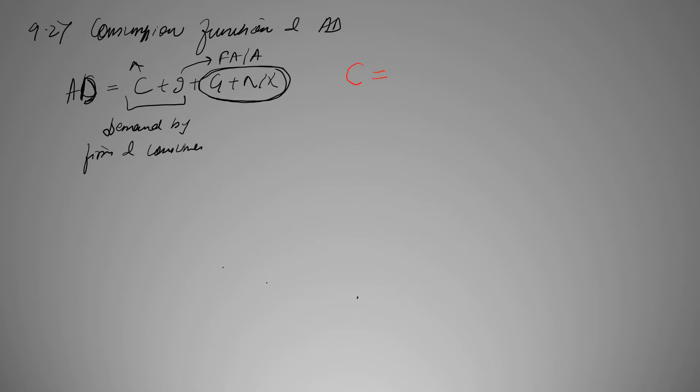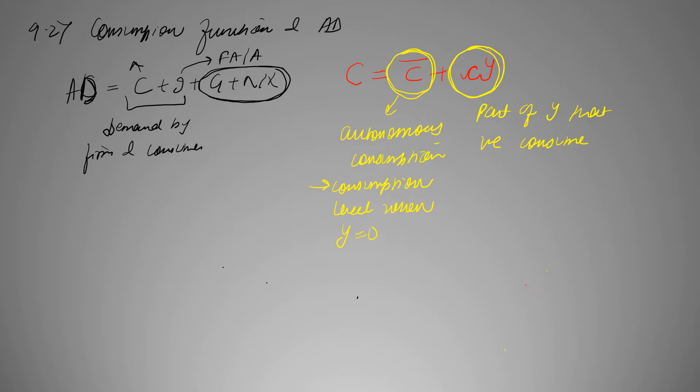C or consumption function is often denoted as autonomous C bar plus CY where autonomous C bar represents your consumption level when income is zero. It basically is your necessity that you require irrespective of your income. And CY represents part of income that we consume. And the C is called MPC which is marginal propensity to consume.